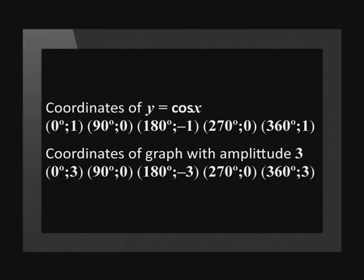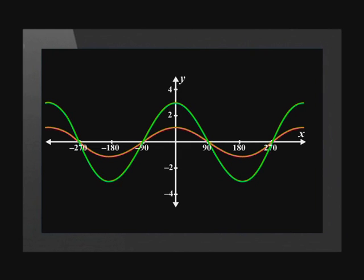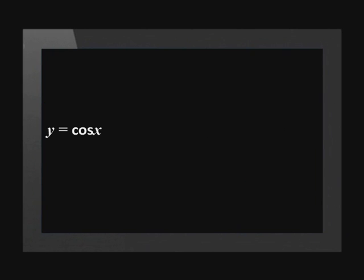If we change the amplitude of the standard graph to 3, it will only affect the y values — we multiply all our y coordinates by 3. Let's plot these points on the same axis as our standard graph and see what this looks like. The change in amplitude stretched the standard graph. The equation of the new graph is y equals 3 times cos x, since we multiplied all the y values by 3.